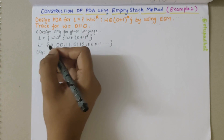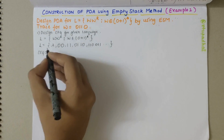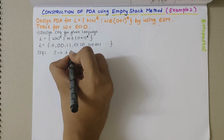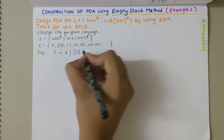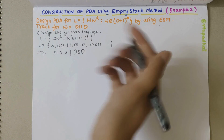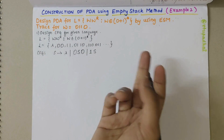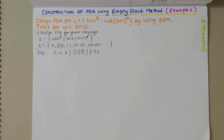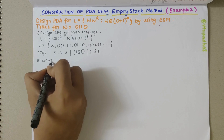We've already learned how to design a CFG for a given language in previous videos. The CFG is: S derives lambda, or S derives 0·S·0, or S derives 1·S·1. This is the CFG. My second step is to convert from CFG to PDAG (Greibach Normal Form).